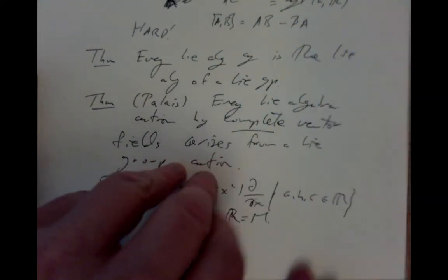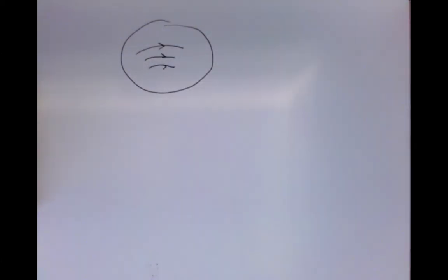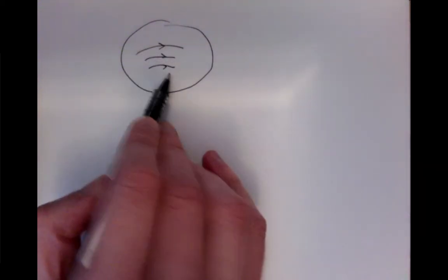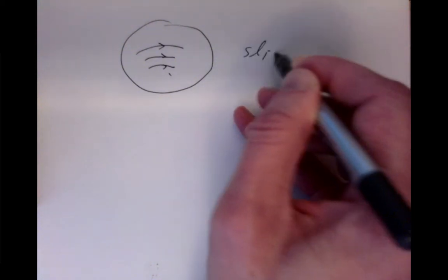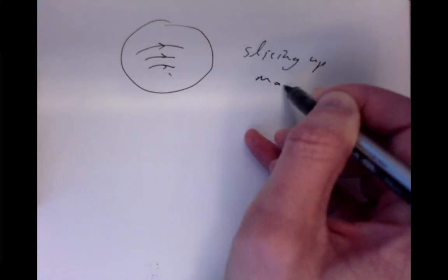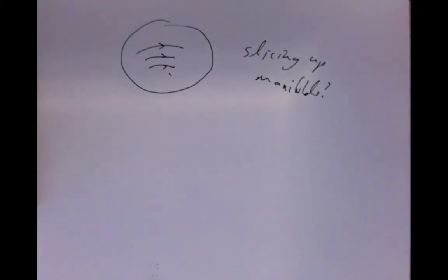As our next step, we want to think about Lie group and Lie algebra actions on manifolds more generally, and in particular how a manifold can be sliced up into orbits. Next time we'll think about a kind of 'salami picture' of a manifold.